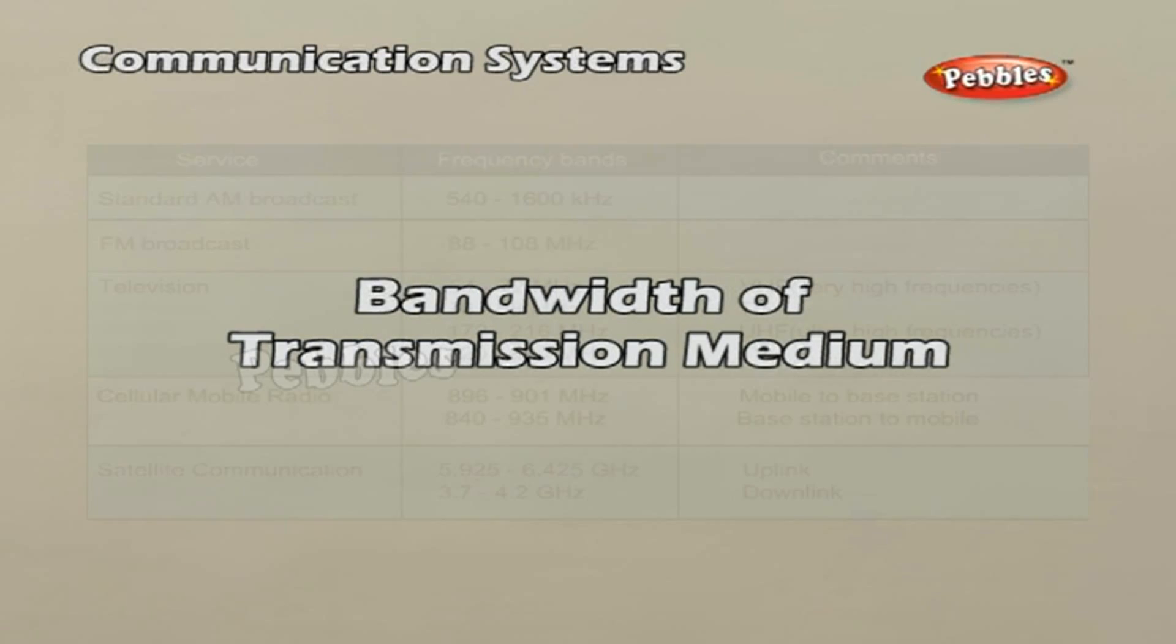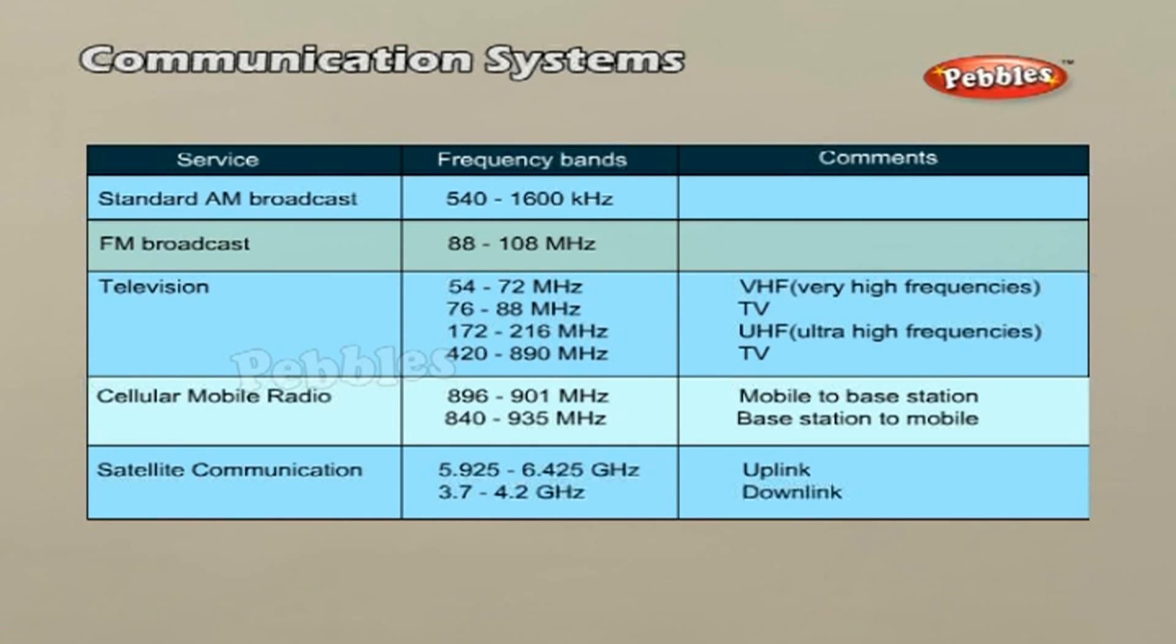Bandwidth of transmission medium. Similar to message signals, different types of transmission media offer different bandwidths. The commonly used transmission media are wire, free space and fiber optic cable. Coaxial cable is a widely used wire medium which offers a bandwidth of approximately 750 MHz.